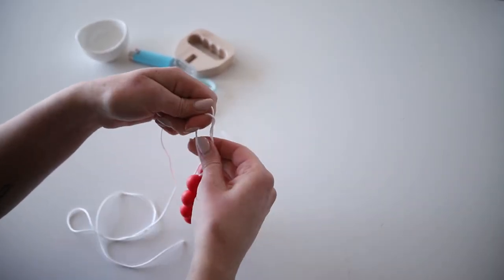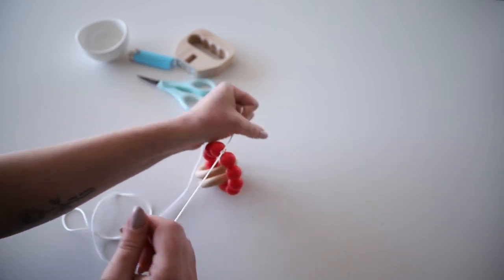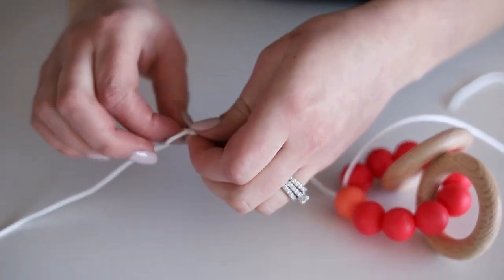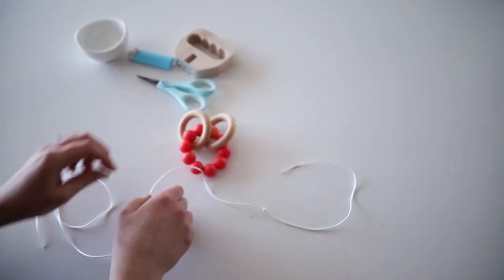This is where the knot gripper comes in super handy. What you're gonna do is you're gonna take both of the loose string and tie a knot about five inches away from the original knot that you have made.